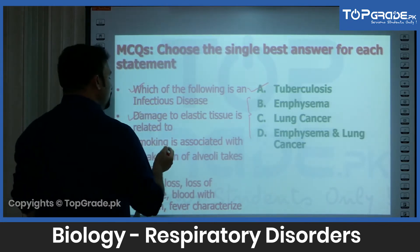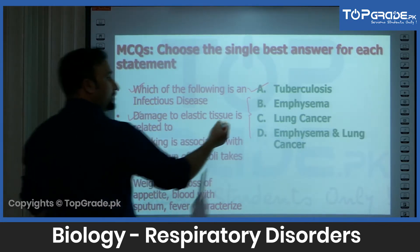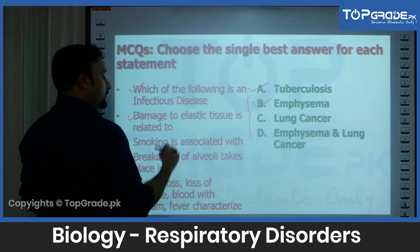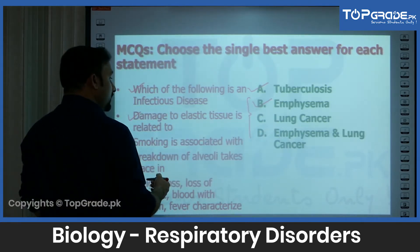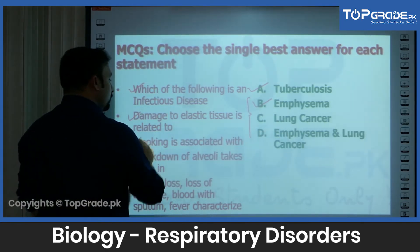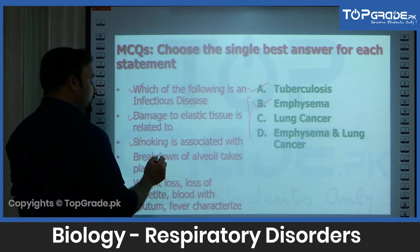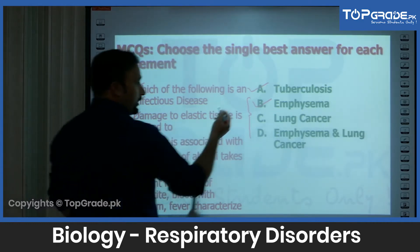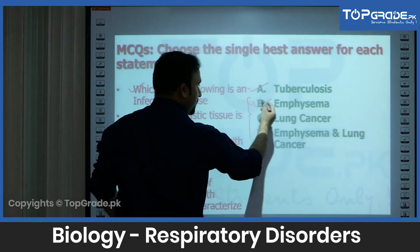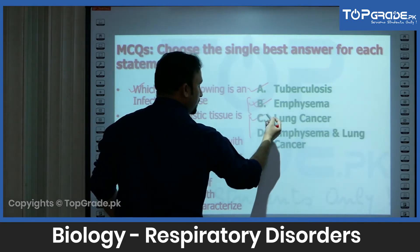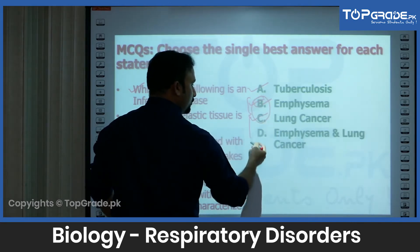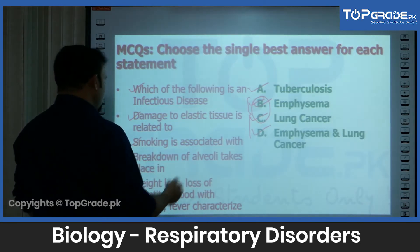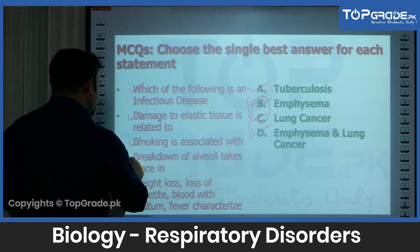Damage to elastic tissue is related to emphysema. So in these diseases, emphysema is related to damage to elastic tissue. Smoking is associated with emphysema and lung cancer — both of them. So the best response to this question would be D — emphysema and lung cancer.